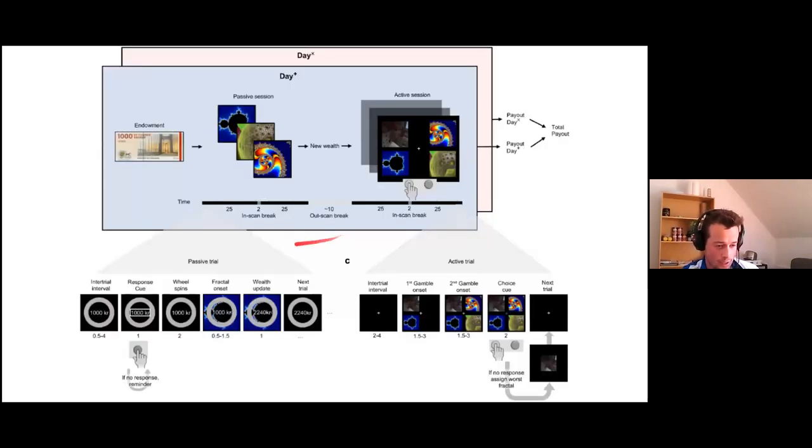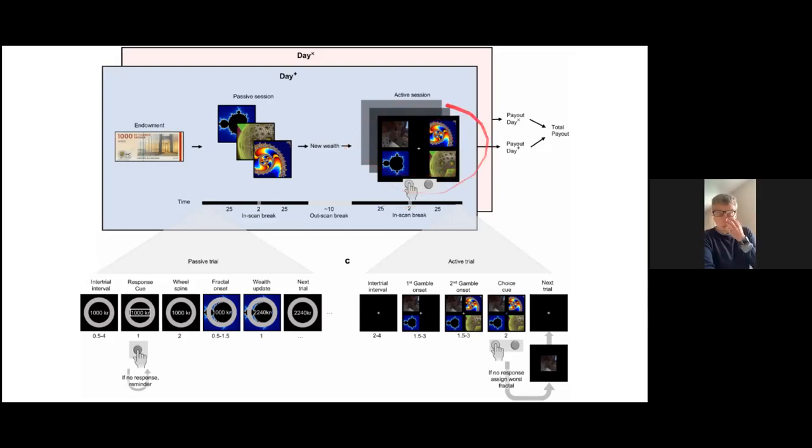Here is an example trial. The subject needs to choose between the left gamble and the right gamble. The gamble consisted of two fractals. After the subject made a choice, then a coin was tossed and the random fractal from the chosen gamble was selected to possibly affect wealth. Note that each gamble was mixed, so one fractal was associated with gains and the other was with loss. Not all trials affected wealth throughout the active session. The outcomes were hidden from subjects throughout the entire experiment.